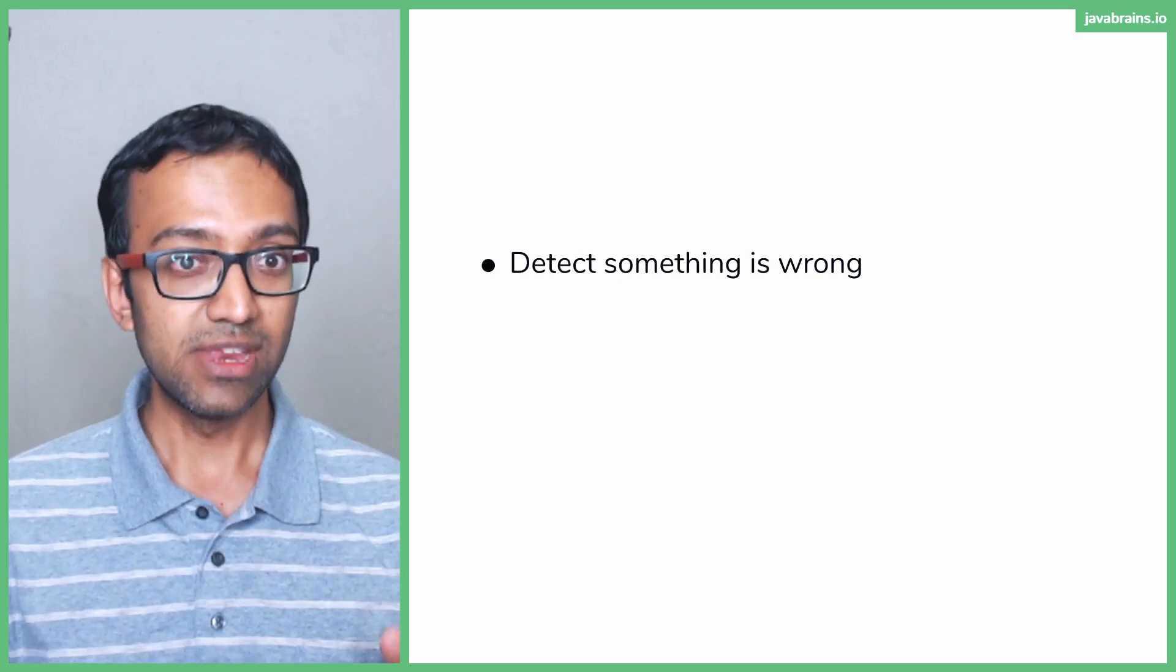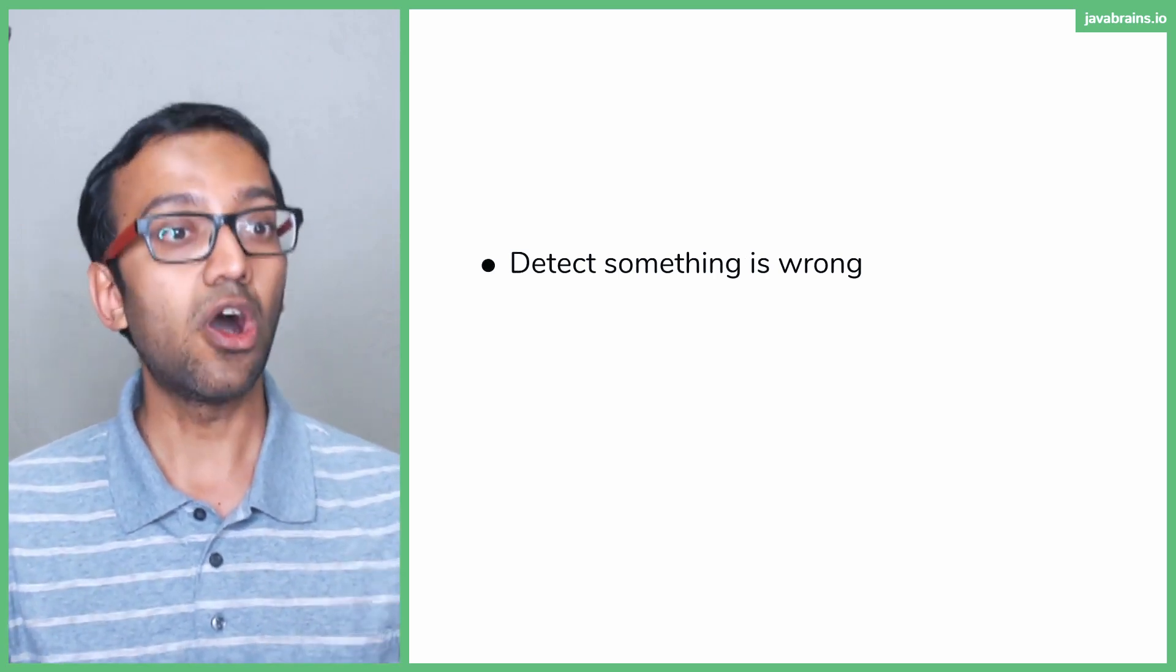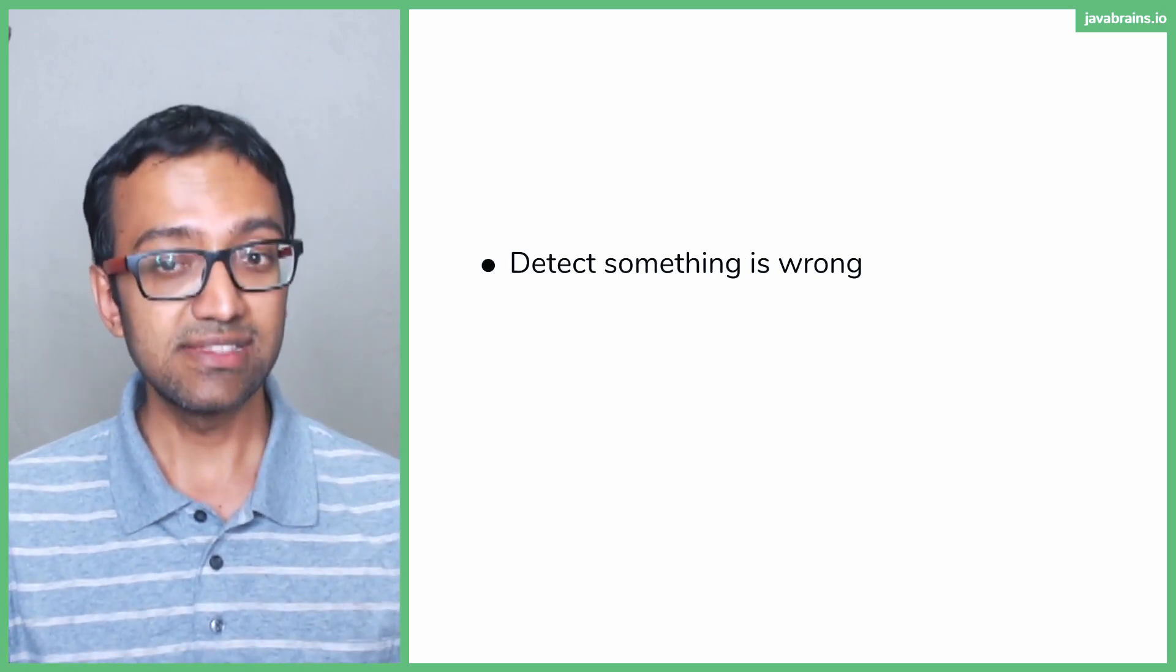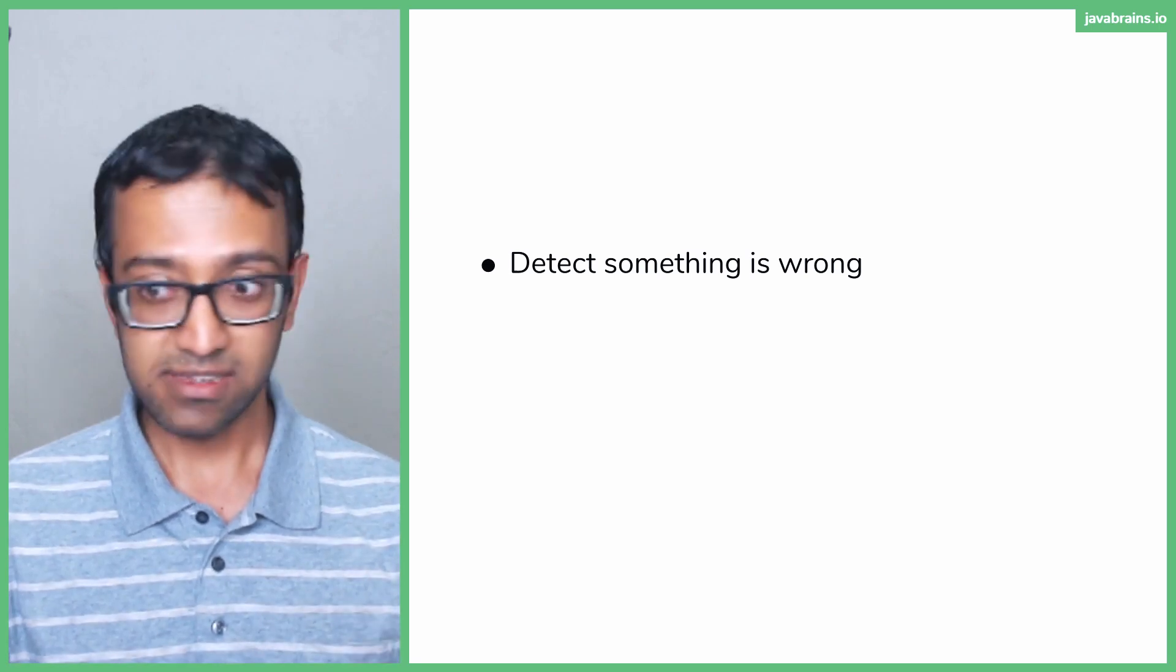This is a popular pattern for fault tolerance in microservices. This is what it entails. First, you detect that something is wrong. The microservice that's calling another microservice has the ability to detect that something is wrong.